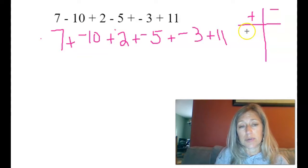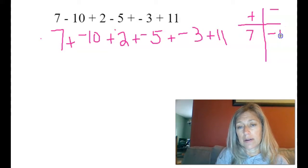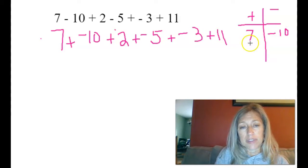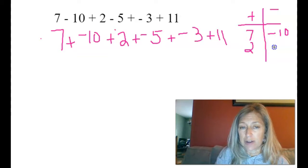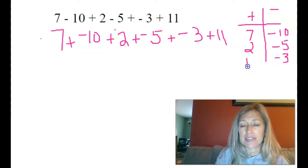The first positive number is 7. 10 is a negative, so I'll write that here. Then I have a positive 2, a negative 5, a negative 3, and a positive 11.